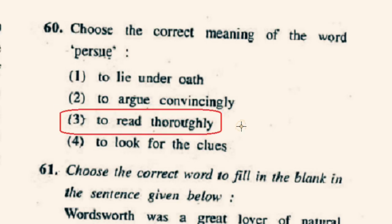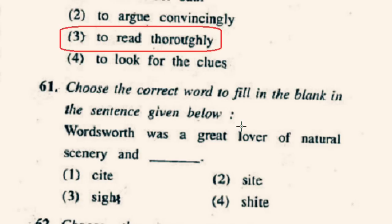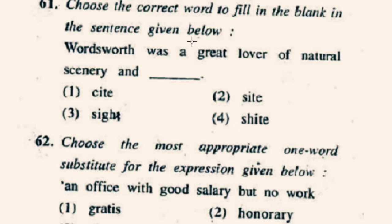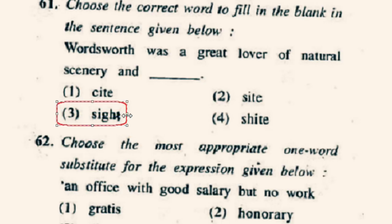Question number 61: Choose the correct word to fill in the blank — 'Wordsworth was a great lover of natural scenery and ___.' The correct option is 3rd option: sight (S-I-G-H-T), which means drishya. The complete sentence will be: Wordsworth was a great lover of natural scenery and sight.